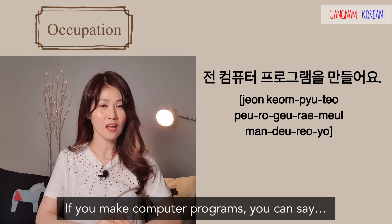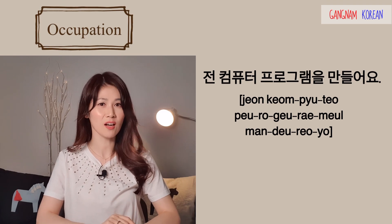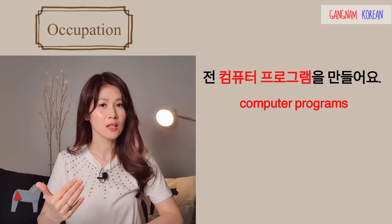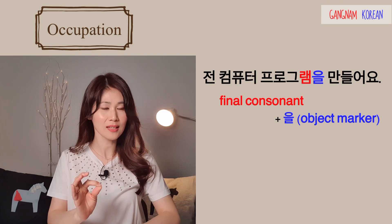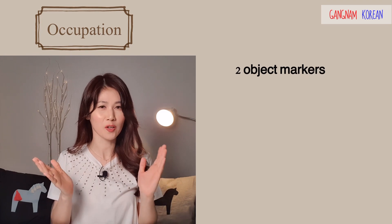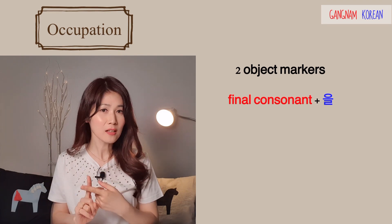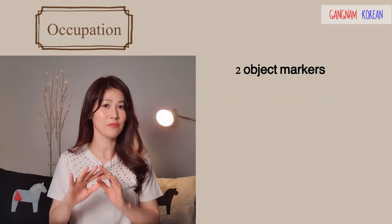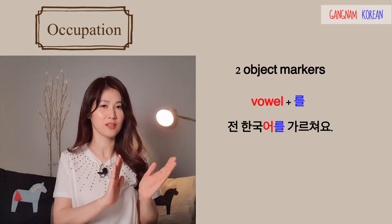If you make computer programs, you can say: 전 컴퓨터 프로그램을 만들어요. 만들어요 means 'make'. 컴퓨터 프로그램 ends with a final consonant, so the object marker is 을, not 를. There are two object markers: 을 and 를. If the object ends with a final consonant, you put 을 — 컴퓨터 프로그램을 만들어요. If it doesn't have a final consonant, you put 를 — 전 한국어를 가르쳐요.